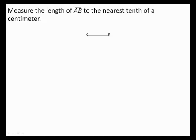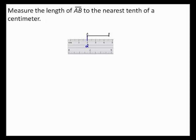Measure the length of segment AB to the nearest tenth of a centimeter. To measure the length of this segment, you can start by aligning one mark on your ruler with A. For example, you can align A with 2. So, the coordinate of A is 2.